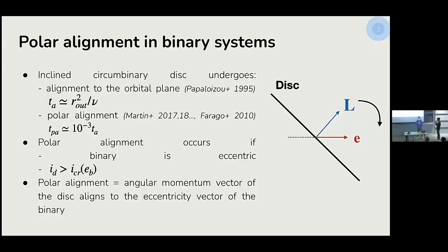The situation we are going to study is the following. We consider an eccentric stellar system with an inclined circumbinary disk, and this disk can undergo two different processes according to the initial inclination. The first one is alignment to the orbital plane, and this phenomenon occurs on a typical timescale of the order of the viscous timescale of the system — about 10 to the 6 years, the disk lifetime.